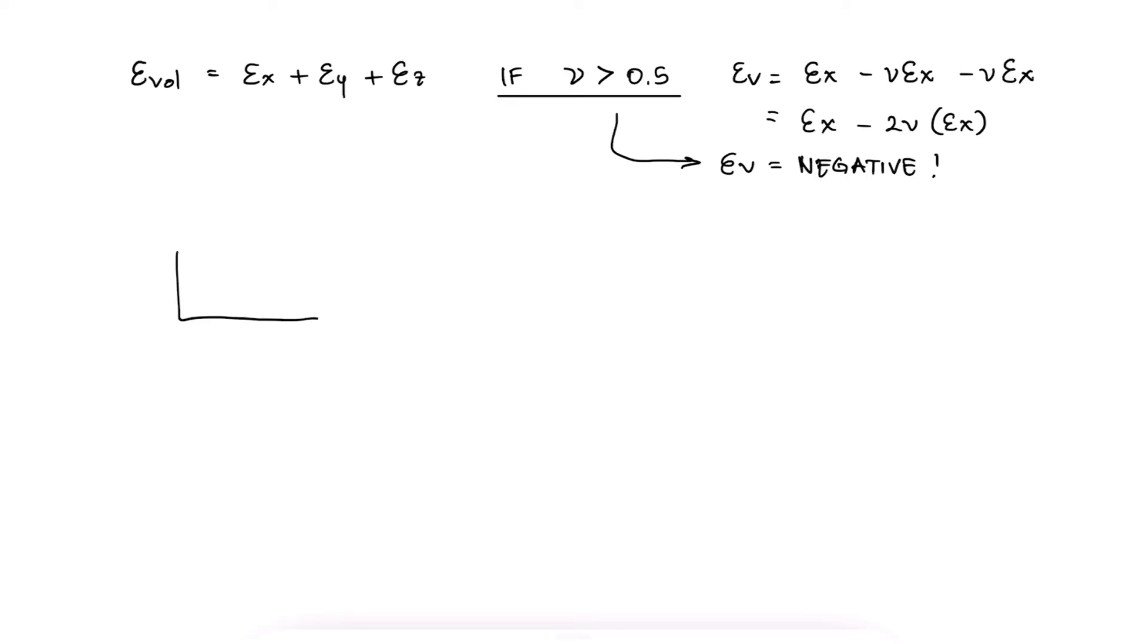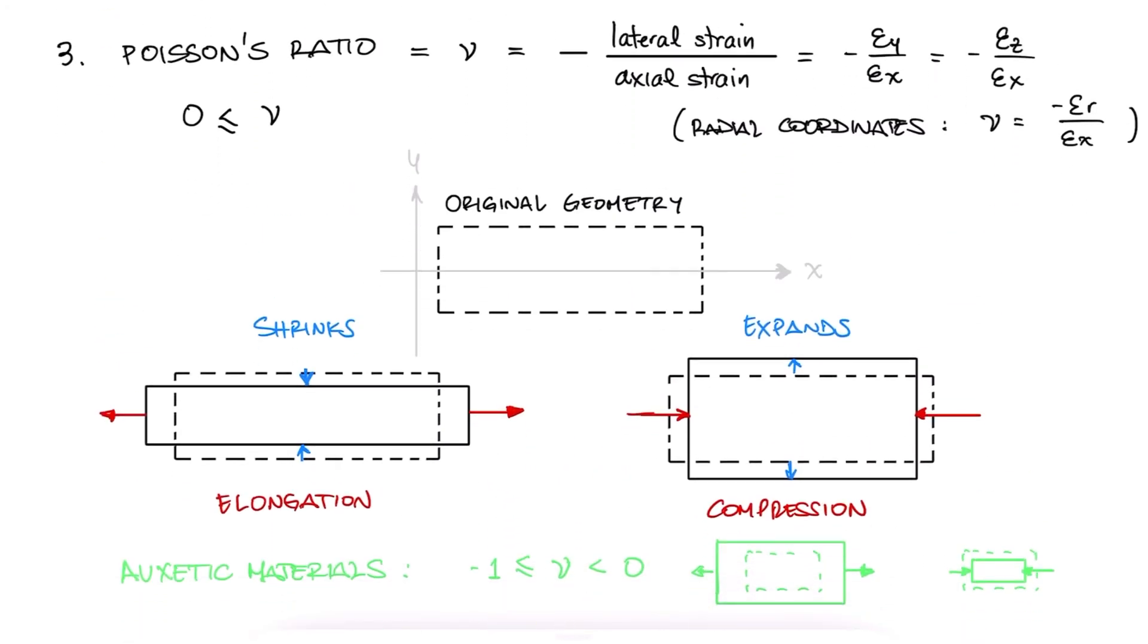This would mean that a structure that is being compressed would have its volume expand, and that a structure that is being subjected to tension would have its volume shrink. And that just doesn't make sense. So for this reason, Poisson's ratio will usually have values between 0 and 0.5.